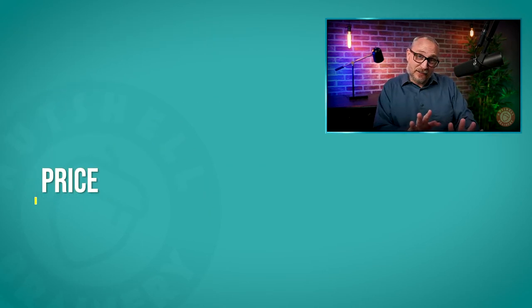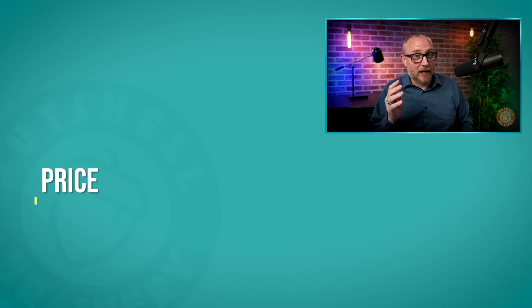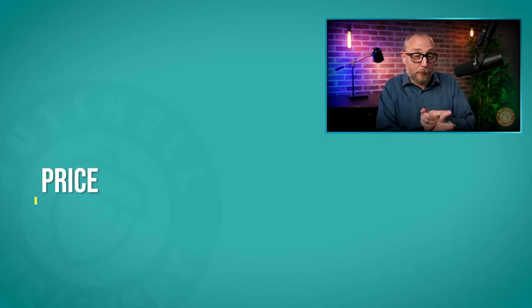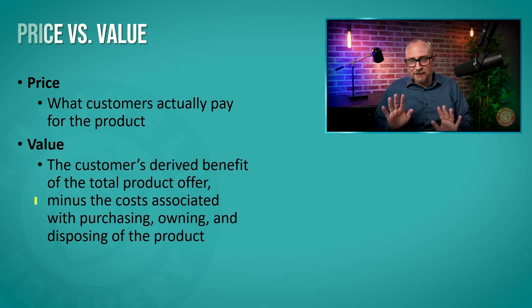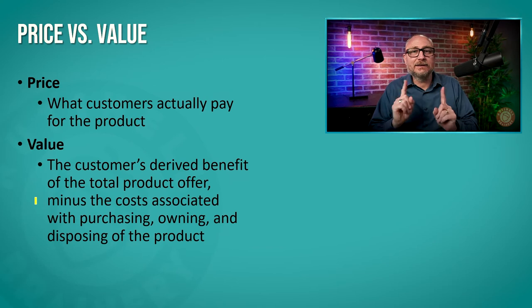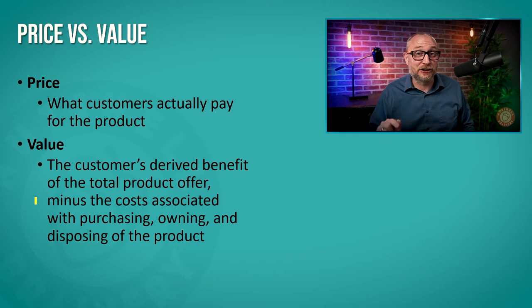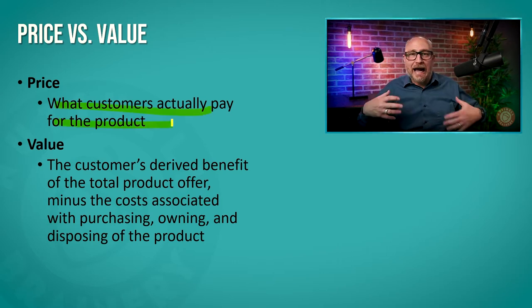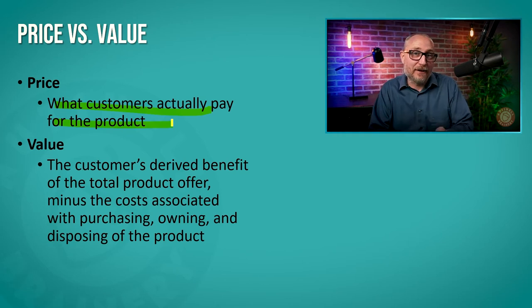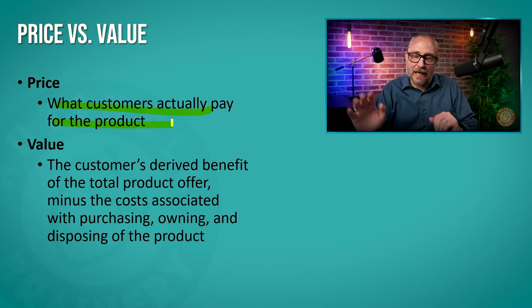That takes us to price — the second P. We've figured out the first P, product. But then we've got to figure out how to price this. Here's the thing: let's understand the difference between price and value, because your customers know the difference. Price is what customers are actually willing to pay for an item.